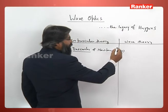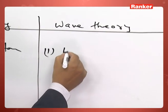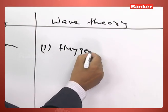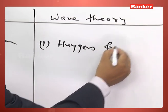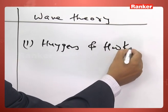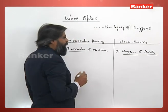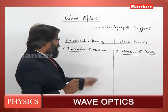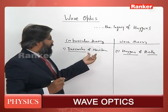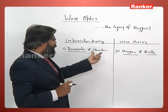Wave theory was introduced by Huygens and also Hooke. Hooke also contributed in this, but since Newton was an authority, corpuscular theory was more popular.